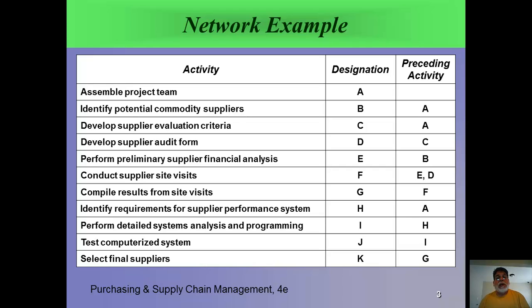Here we have an example using the network version — not the Gantt chart, but the network version. We have activities running from A all the way down to K, with a listing of preceding activities. For example, before you do B you have to do A; before you do C you have to do A. This is a condensed version of your total project showing major activities, each of which can be broken down into sub-activities.